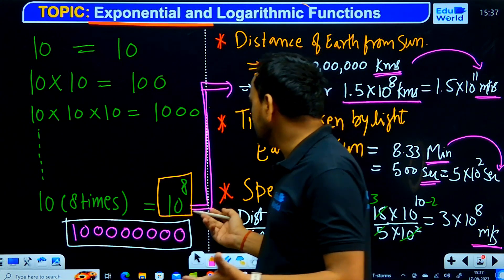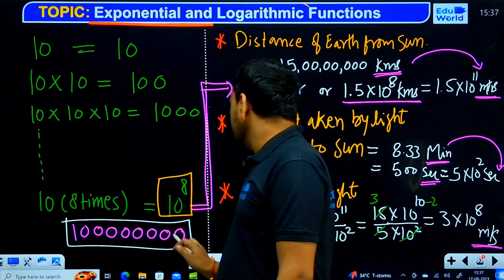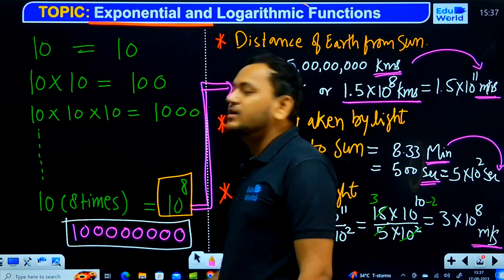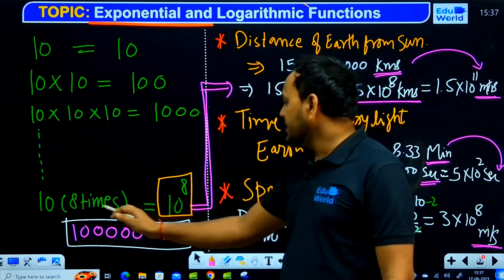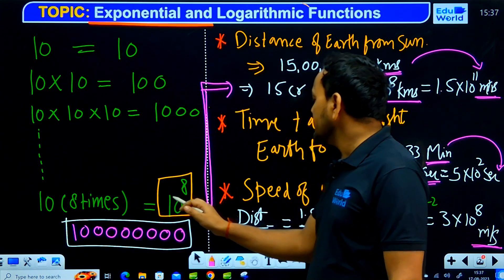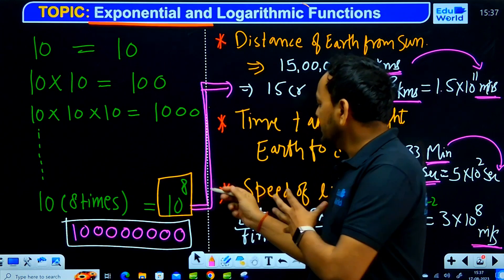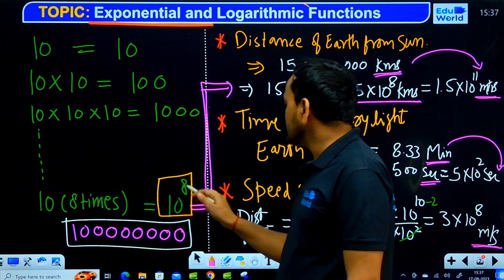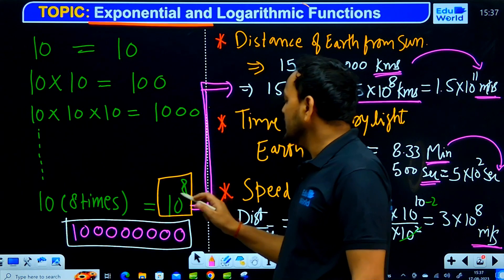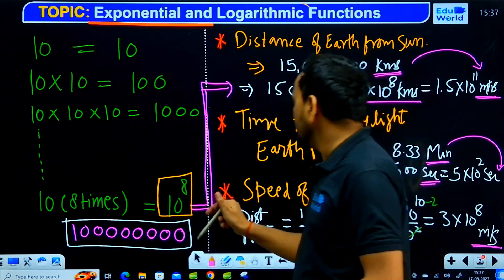When we represent numbers in powers and exponents, we count how many zeros there are: 1, 2, 3, 4, 5, 6, 7, 8 — we have 8 zeros. This means we multiplied 10 eight times to get this big number. We can represent this as 10 to the power 8. So we look at how many times we multiply and what number we are multiplying, and we can represent it compactly as 10 to the power of 8.